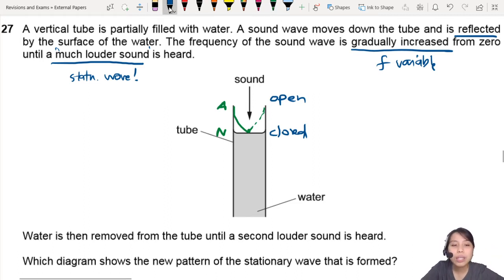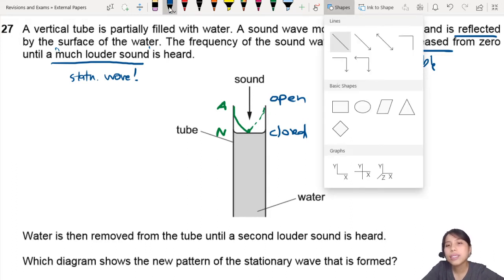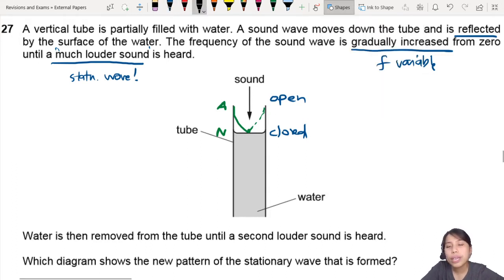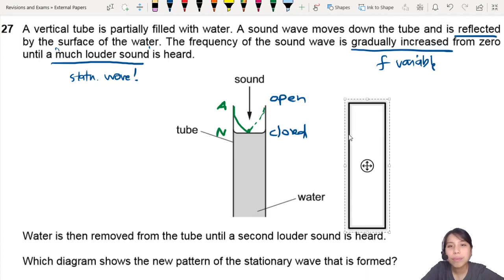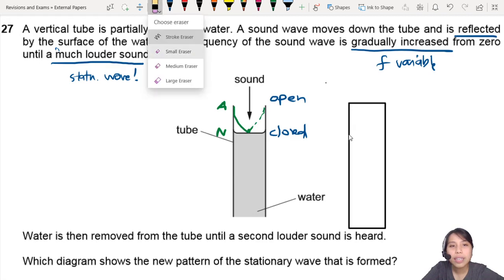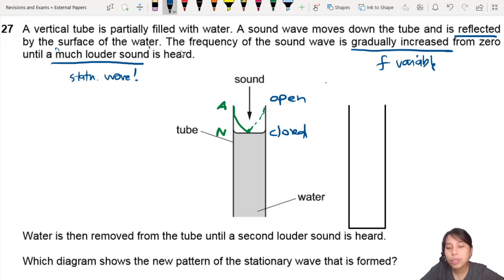And then your water is removed from the tube until you hear another loud sound. Why does that occur, though? So we can try to draw this out. I guess it will look something like this. Okay, so I'm going to create a second tube right here. There we go. And now we have the water level that has been removed, so it's going to be much lower, somewhere here.